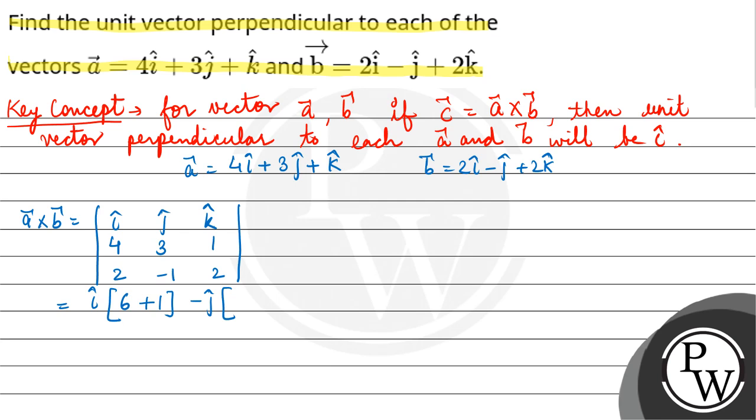(4×2 - 2×1) plus k cap (4×(-1) - 3×2), which is -4 - 6.